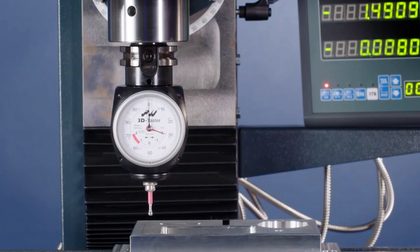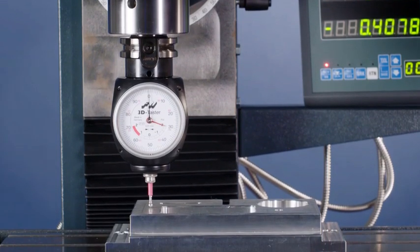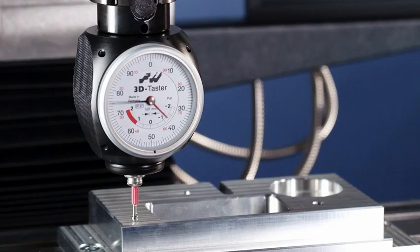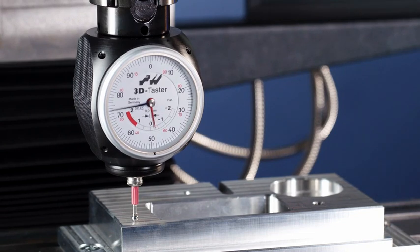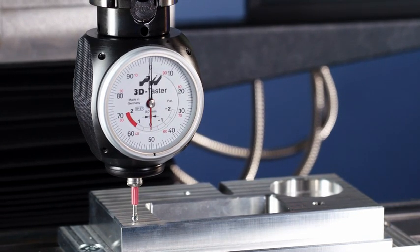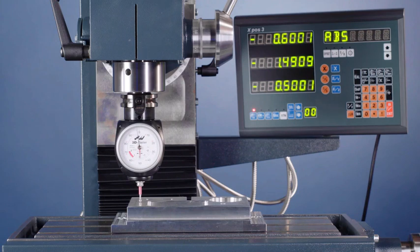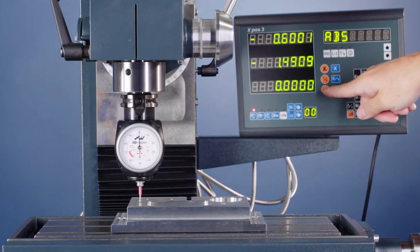If you want to locate in Z, just position the probe tip above the desired area of the part, then bring the sensor down until the black and red hands both come to zero. Again, when the black and red hands are both positioned at zero, the edge of the part is in alignment with the center axis of the machine.